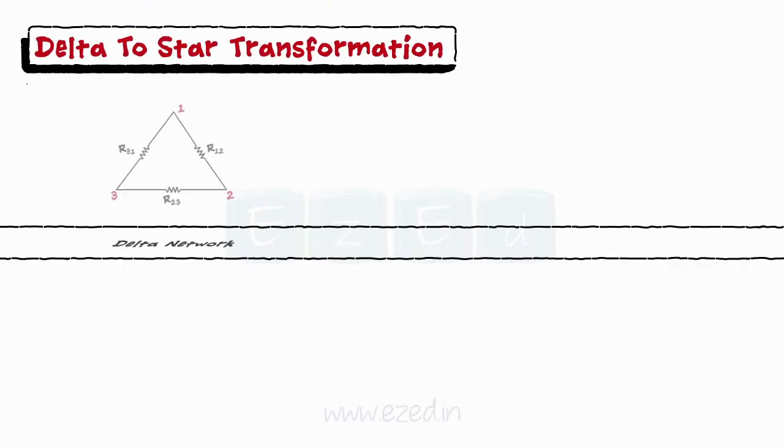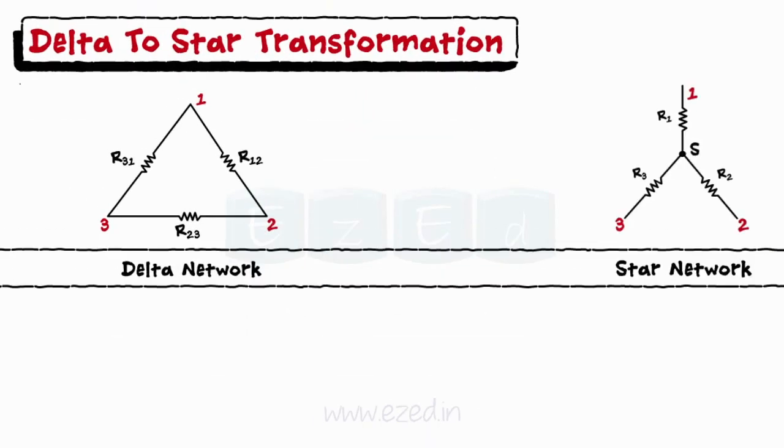Consider the delta and star networks as shown. The resistances connected in the star are calculated as R1 equals R12 into R31 upon R12 plus R23 plus R31.